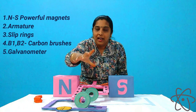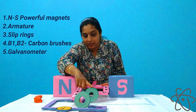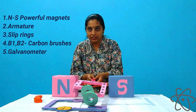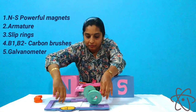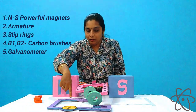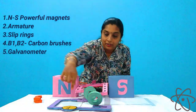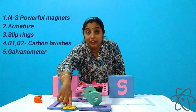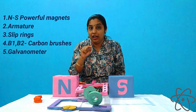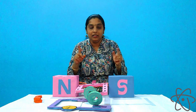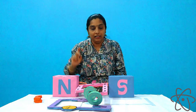The slip rings are connected to two carbon brushes. This slip ring is connected to carbon brush B1 and the other slip ring is connected to carbon brush B2, and both are connected to a galvanometer. In the motor we connected it to a battery, but here we connect to a galvanometer. Why? Because the function of this generator is to convert mechanical energy to electrical energy, and the galvanometer detects the presence of current in the output.